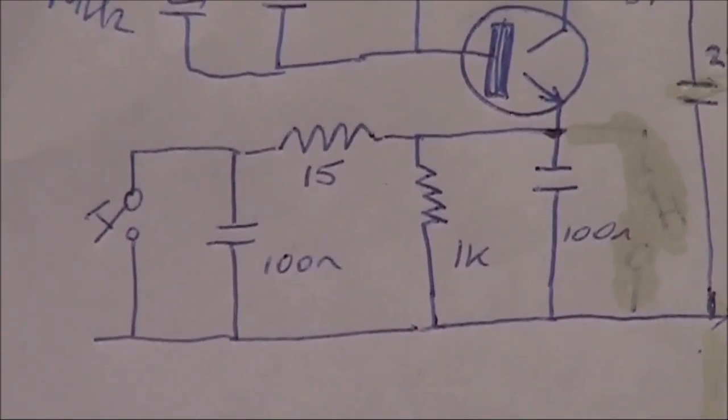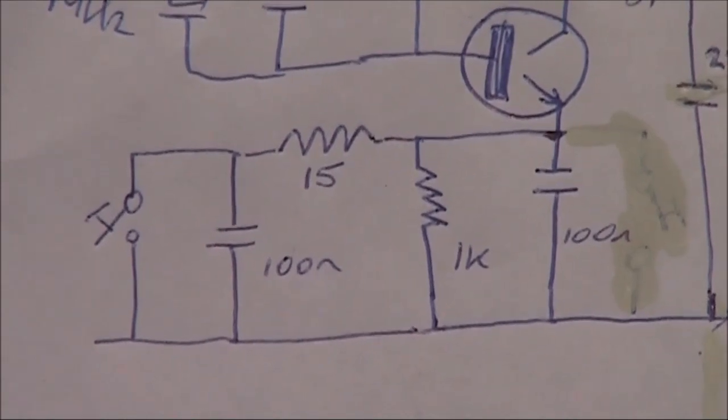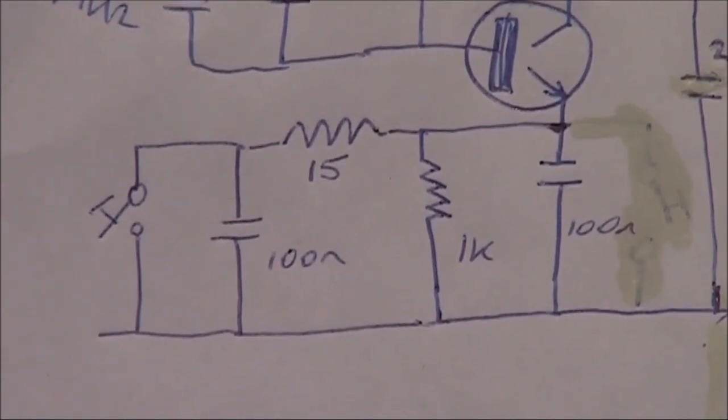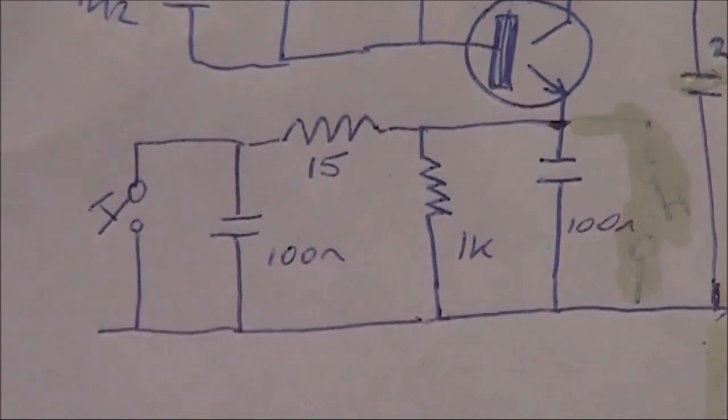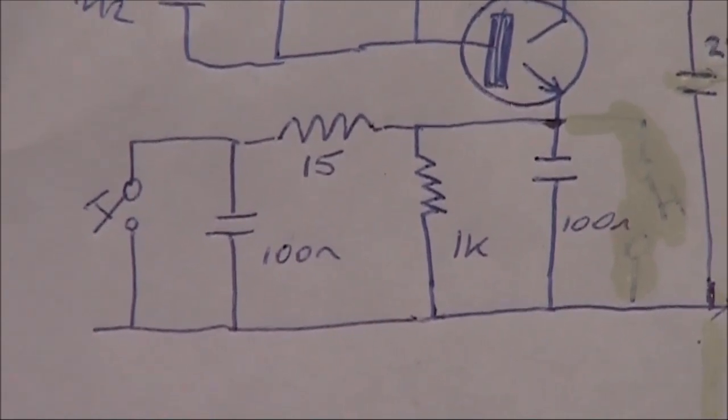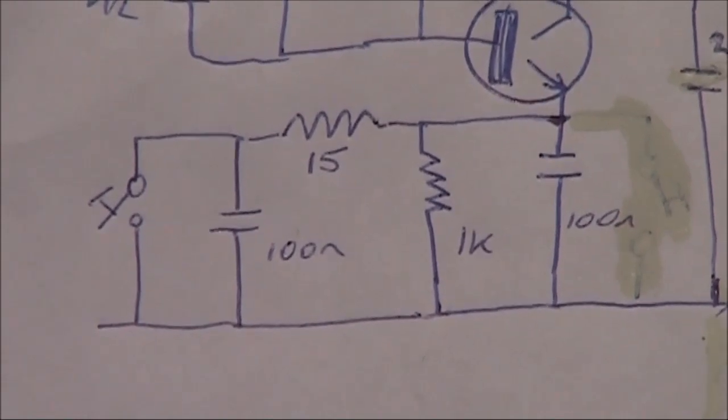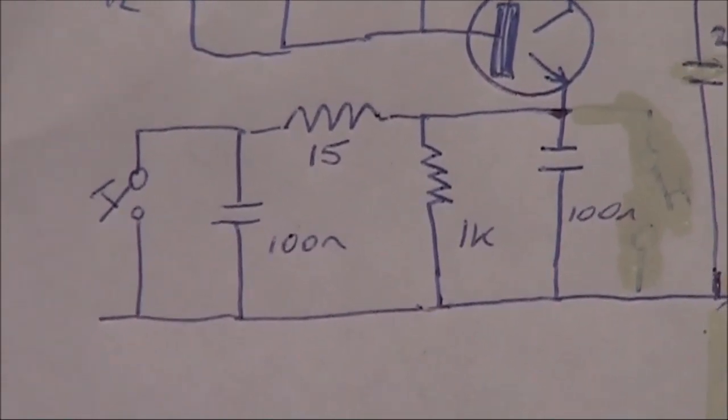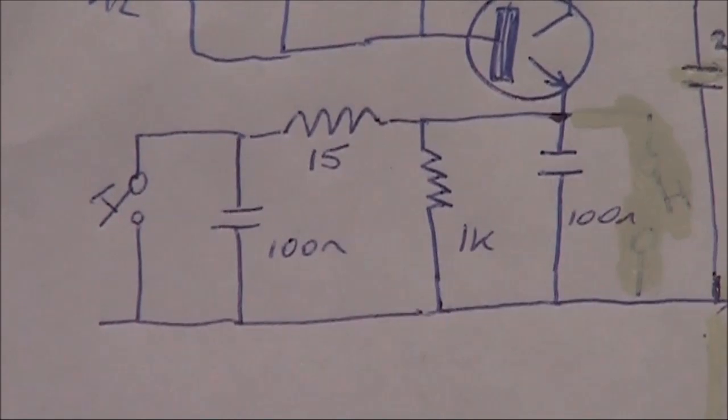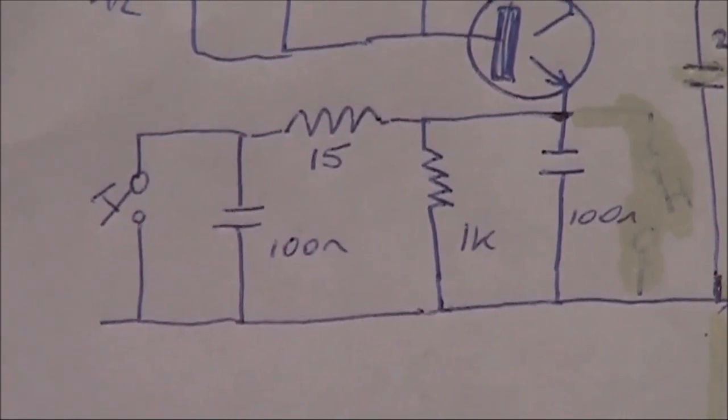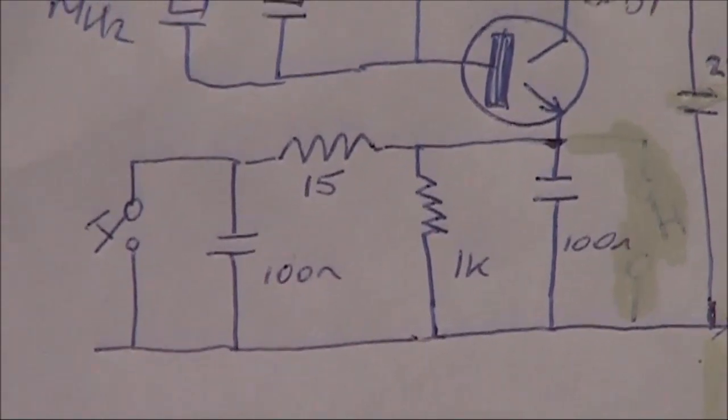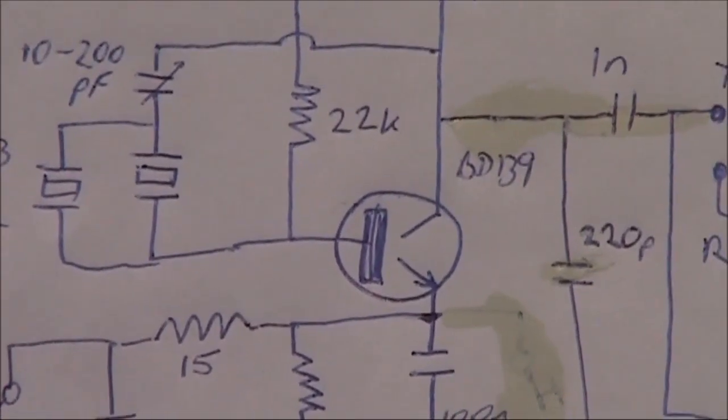And down here in the emitter circuit is the keying part. The 1k resistor means that the oscillator is on at all times, that's needed for receive. And then if you want to go to transmit, then you press the key, and that allows a lot more current to go through the emitter circuit of the transistor, and thus it puts out more output power.